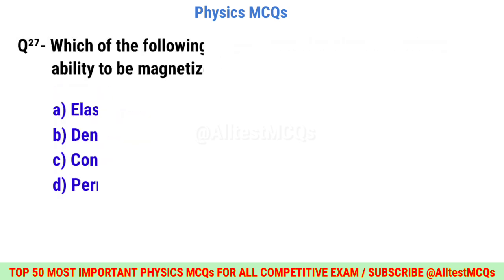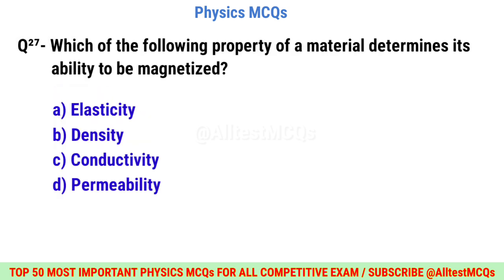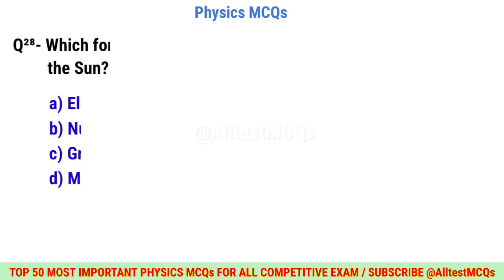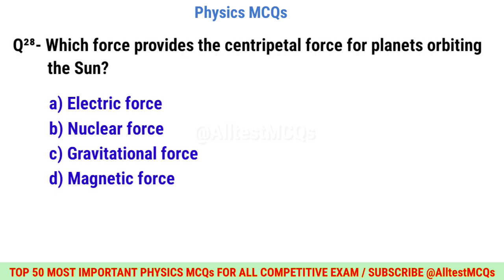Question number twenty-seven: Which property of a material determines its ability to be magnetized? Correct option is D: Permeability.